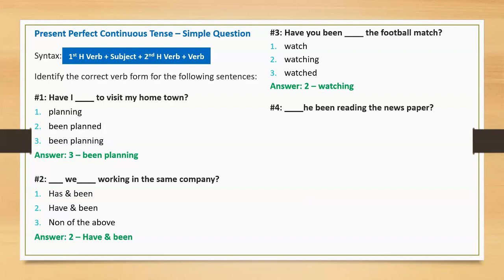Sentence four: 'Blank he been reading the newspaper?' Options: has, have, and are. Correct answer: has. Full sentence: 'Has he been reading the newspaper?'